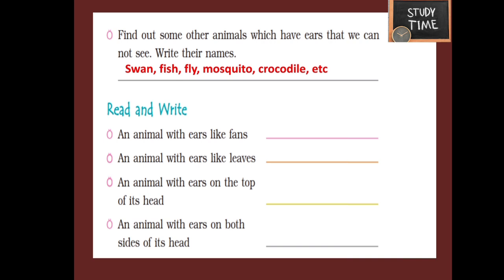Next, read and write. An animal with ears like plants is the elephant. An animal with ears like leaves is the deer. An animal with ears on the top of its head is the rabbit. An animal with ears on both sides of its head is the dog.